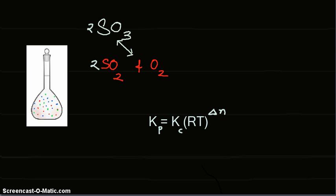The relationship between Kp (in terms of partial pressures) and Kc (in terms of concentration) is: Kp equals Kc times RT raised to delta n.